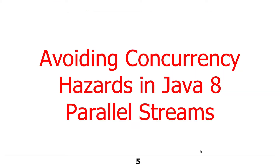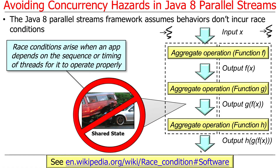So we'll talk a little bit about concurrency hazards. What the heck is a concurrency hazard? A concurrency hazard is something that goes wrong in your program when you start to run it concurrently or in parallel. I'm using the word concurrency hazard to also discuss parallel problems too.